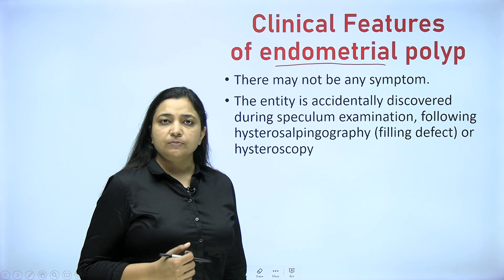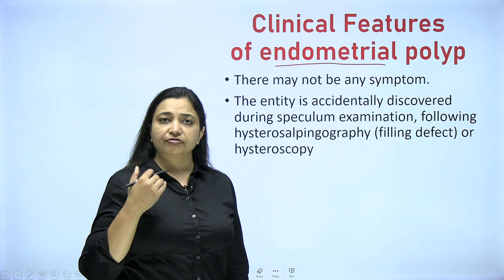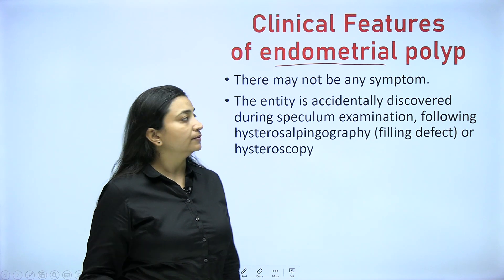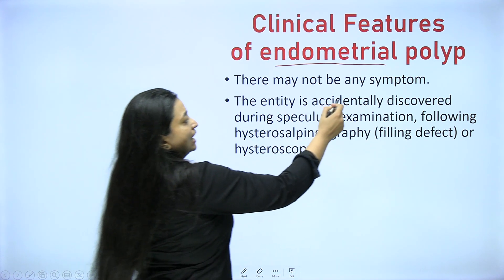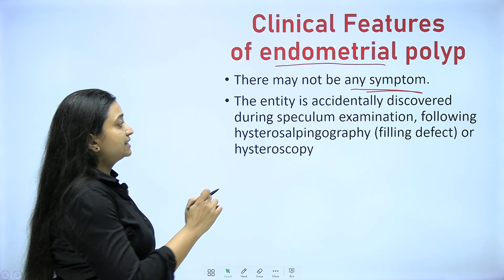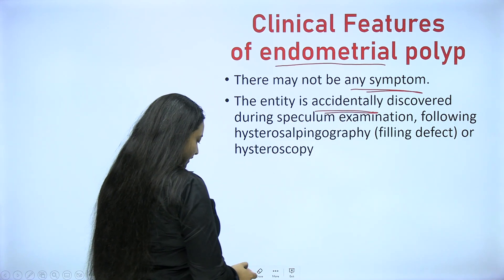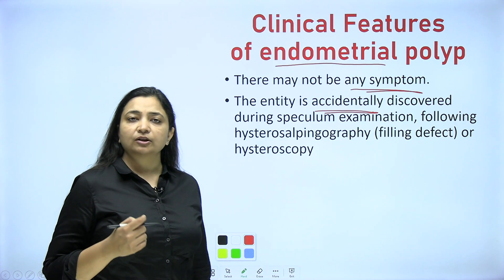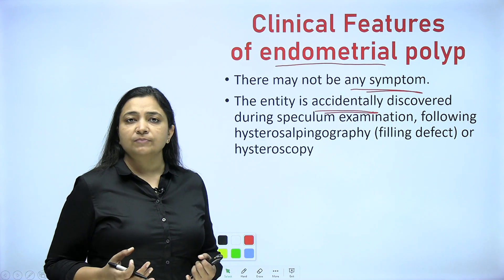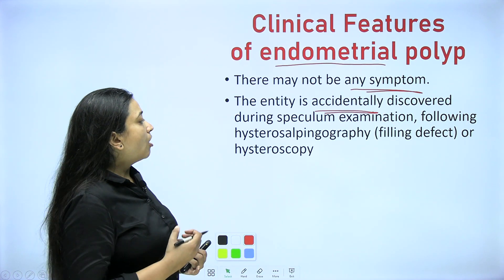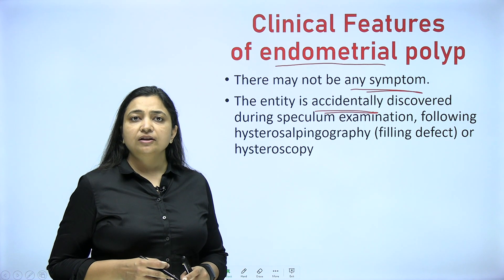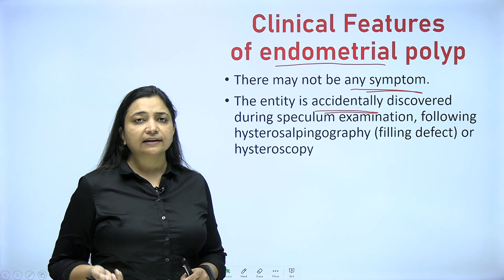As we know there are four different kinds of polyps which we are dealing with, and every polyp has different presenting features. Even after eliciting the history you can say what it could be. Most endometrial polyps are symptomless - if they are small in size, they generally do not cause any symptom and are accidentally discovered. The patient comes for some other complaint and you find there is a polyp - either on per speculum examination, on HSG, hysteroscopy, or on ultrasound.